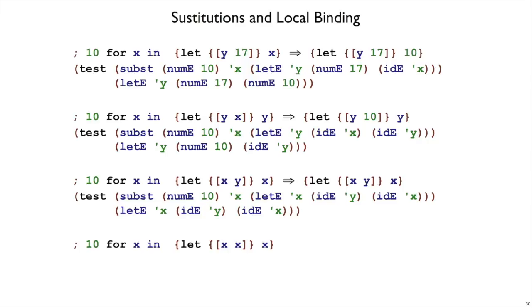Let's look at one more example. Suppose we have x's everywhere. We're replacing all the x's with 10 in let x be x and x. Should this x get replaced? Well we said before that this x should not refer to this x, that the binding x should only become available in the body over here. So in fact this x we do want to replace by 10.